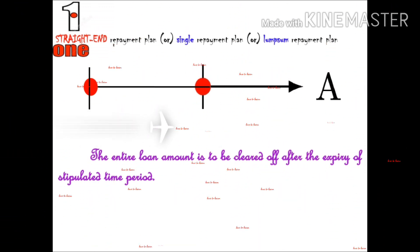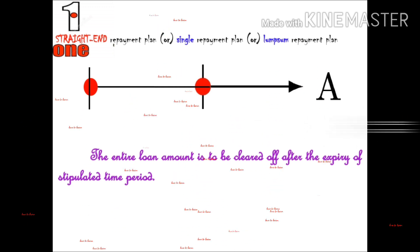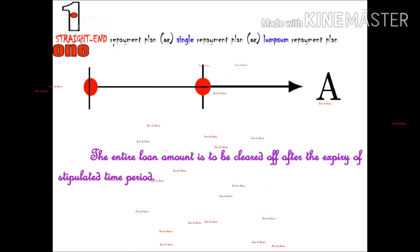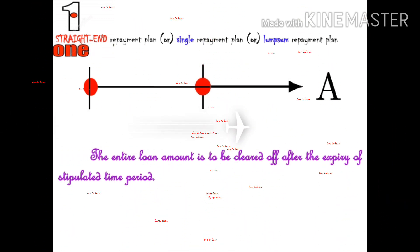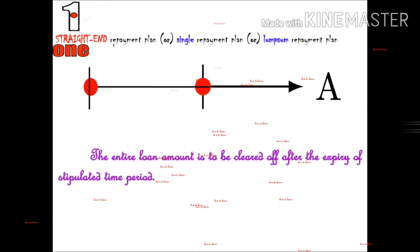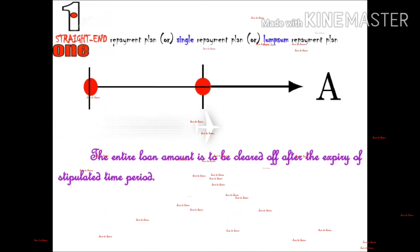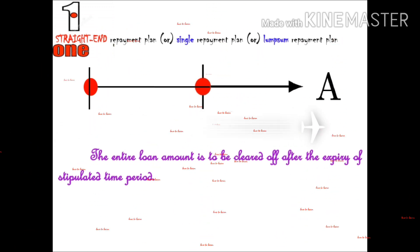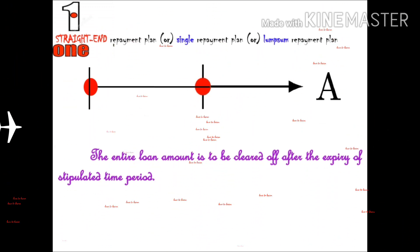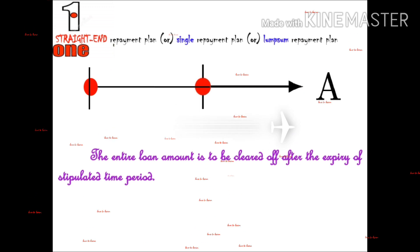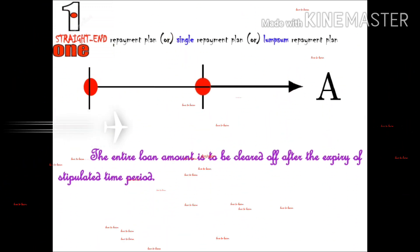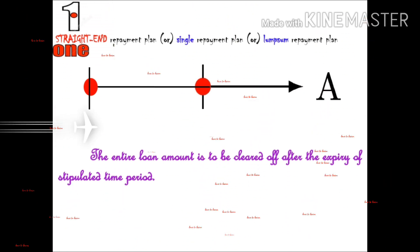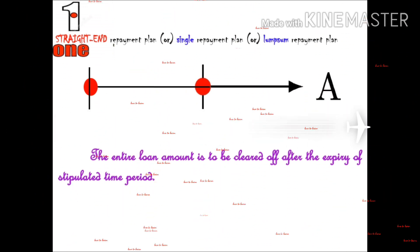The first type is the straight-end repayment plan. The entire loan amount is to be cleared off after the expiry of the stipulated time period. However, the interest is paid each year. This is called the straight-end repayment plan.